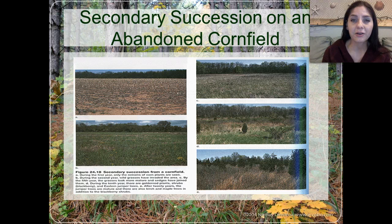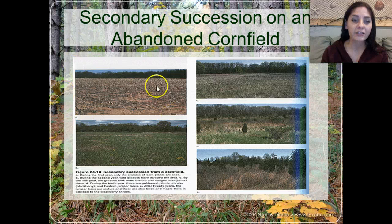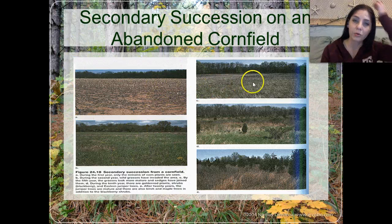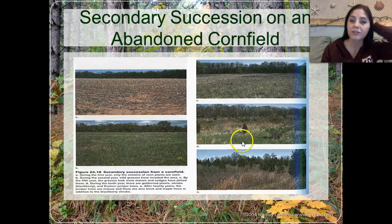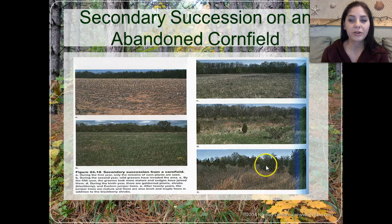Secondary succession on an abandoned cornfield is another example — this would be after agricultural farming. They basically left the soil alone. So you start to see a lot of grasses colonizing. More and more grasses, some wildflowers. Then we start to get some shrubs and small trees. And eventually we have an environment similar to the one surrounding it with full-grown trees.